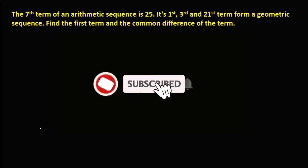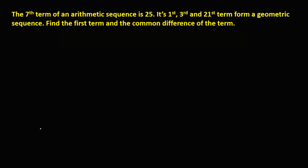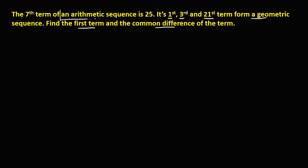Welcome to MathStoria and its problem. The 7th term of an arithmetic sequence is 25. Then the 1st term, 3rd term, and 21st term form a geometric sequence. Find the 1st term and the common difference.